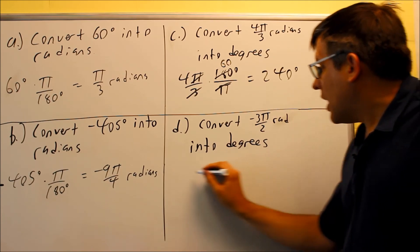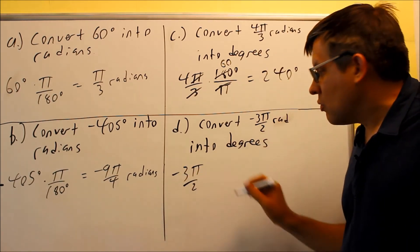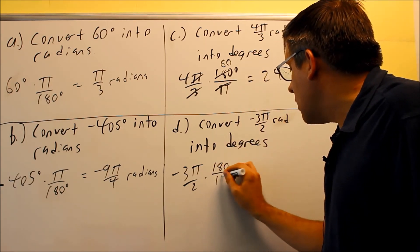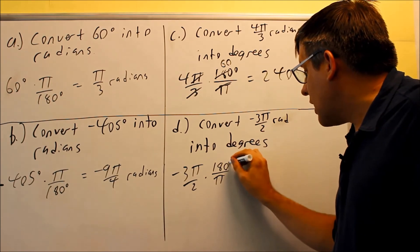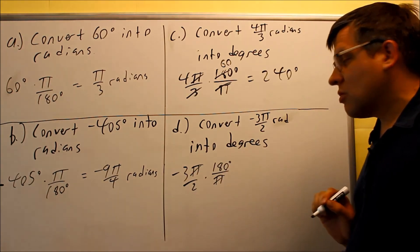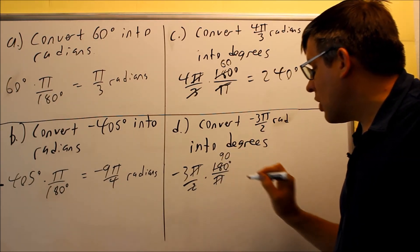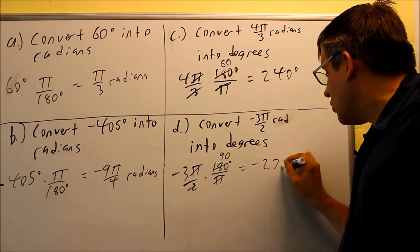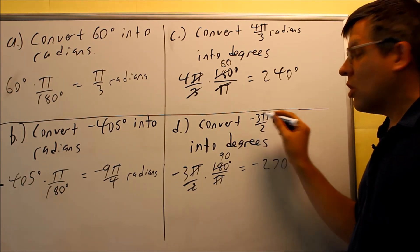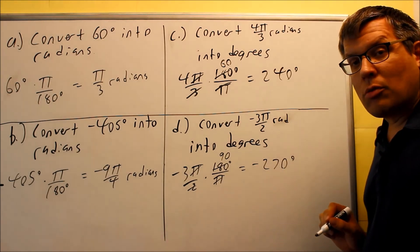We want to do negative 3π over 2. We want to take that into degrees. We'll do the same thing we did before. We're going to multiply by 180 over π. We want the π's to cancel. So the π's do cancel here in this case. Also, 2 goes into 180, you'll be left with 90, gives you 270 degrees as your result. So again, notice that we get a negative there for radian measurement, which means we should have a negative there for our degree measurement.